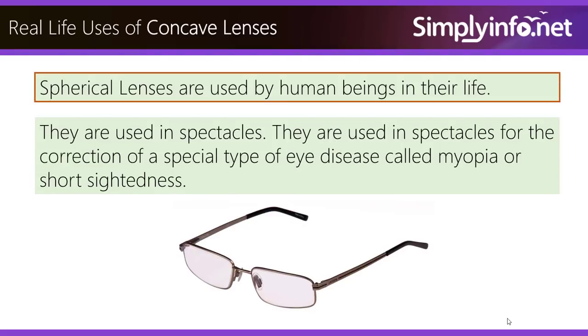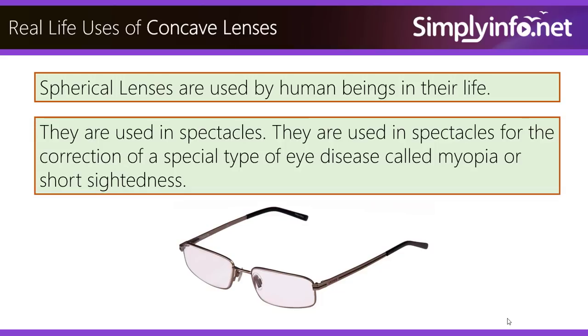Spherical lenses are used by human beings in their life. They are used in spectacles for the correction of a special type of eye disease called myopia, or short-sightedness.